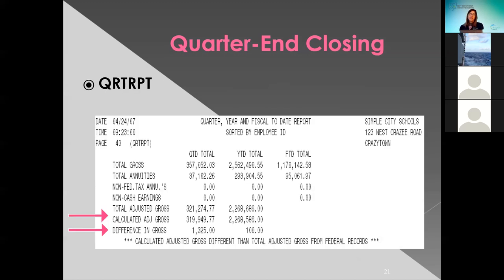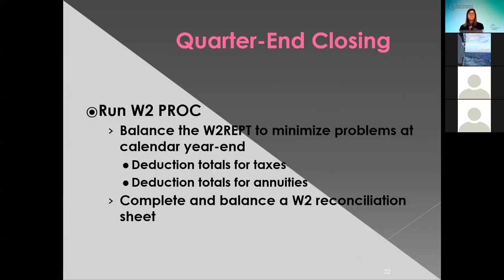Here's a screenshot of the quarter report showing what they will be looking for when balancing — make sure your difference in gross is zero. Then you can go ahead and start running W2 proc. You want to balance the W2 report to minimize any problems at calendar end. They can run it after every payroll if they like — that way at calendar end they don't have a lot of time trying to figure out why they're off. They can go ahead and complete and balance a W2 reconciliation sheet at this time.